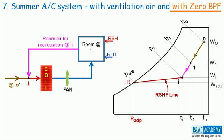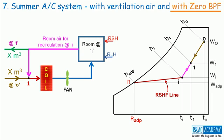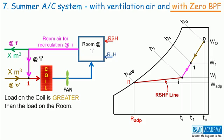Let us now plot this process of mixing of air streams on the psychrometric chart. T1, W1 and H1 are the properties corresponding to state point 1. If we are taking x cubic meters of ventilation air into the system, then we must throw x cubic meters of recirculation air out into the atmosphere. The remaining recirculation air at state I will be used in the system. Please note here that the coil is handling the ventilation load in addition to the room loads. Therefore, the load on the coil is greater than the load on the room.